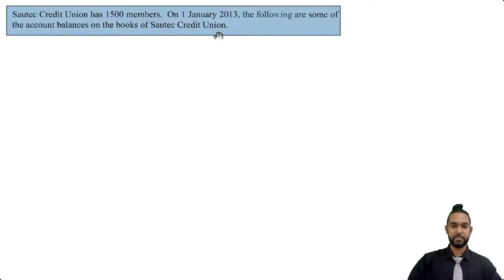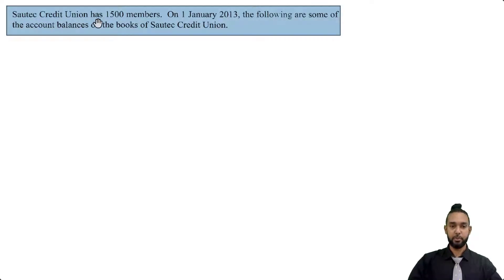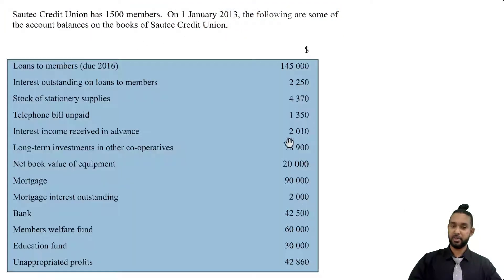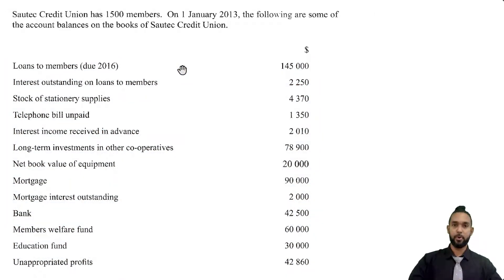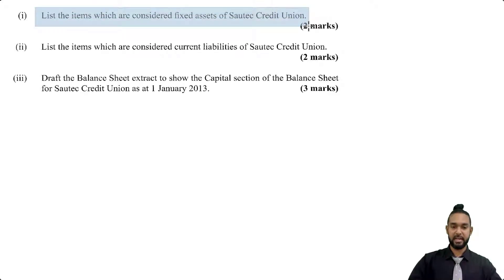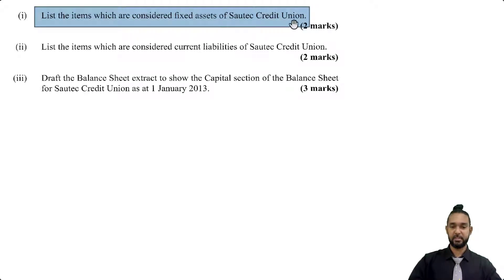Part A of the question starts off by telling us that South Tech Credit Union has 1500 members. On the 1st of January 2013, the following are some of the account balances on the books of South Tech Credit Union. They give us this big list of balances — not a trial balance, it doesn't have a debit side or a credit side, just a list of balances. Before we go through each item one by one, it's more efficient to check what they want us to do first. The first thing they want us to do is list the items which are considered fixed assets of South Tech Credit Union.